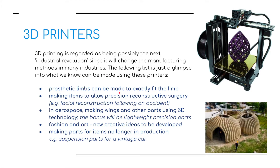Prosthetic limbs can be made to exactly fit where they need to go in the body. 3D printing also allows for making items used in precision reconstructive surgery following an accident. In aerospace, wings and other parts can be made using 3D technology that are very light and very precise. In fashion and art, new creative ideas are being developed. 3D printing also allows making parts for products that no longer exist, such as suspension parts for a vintage motor car. As another example, giant 3D printers are being used to print 3D housing from cement, and these can be printed all over the world very quickly.